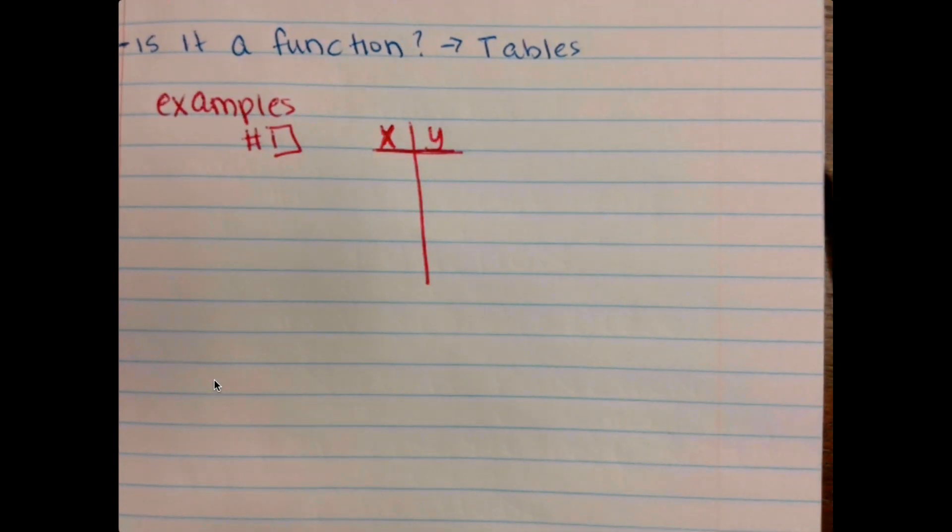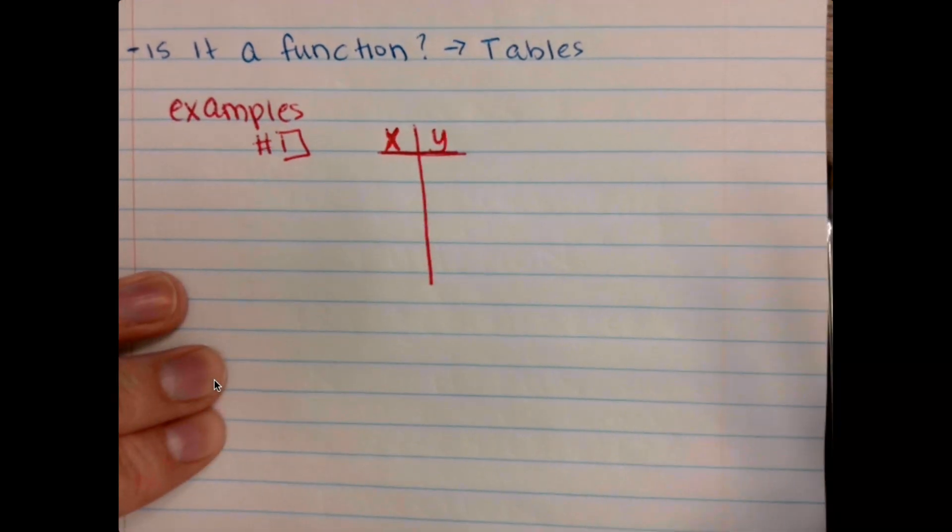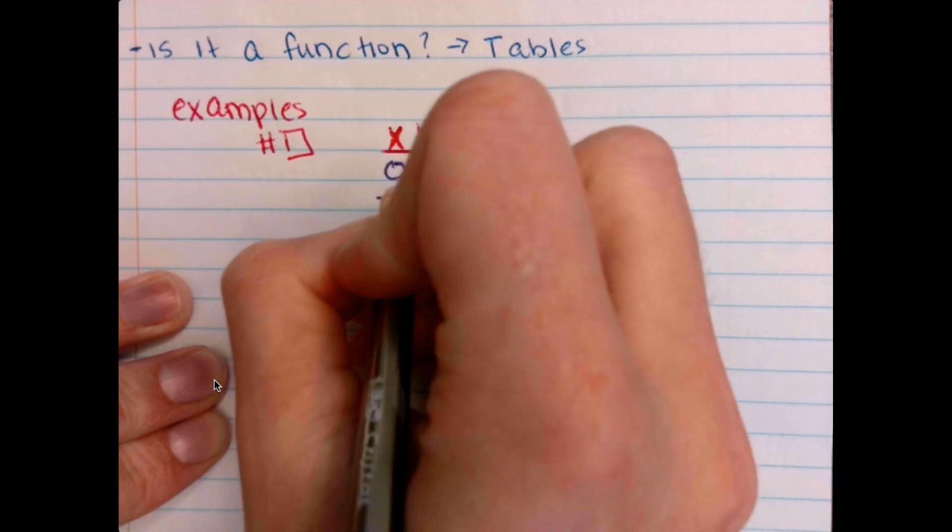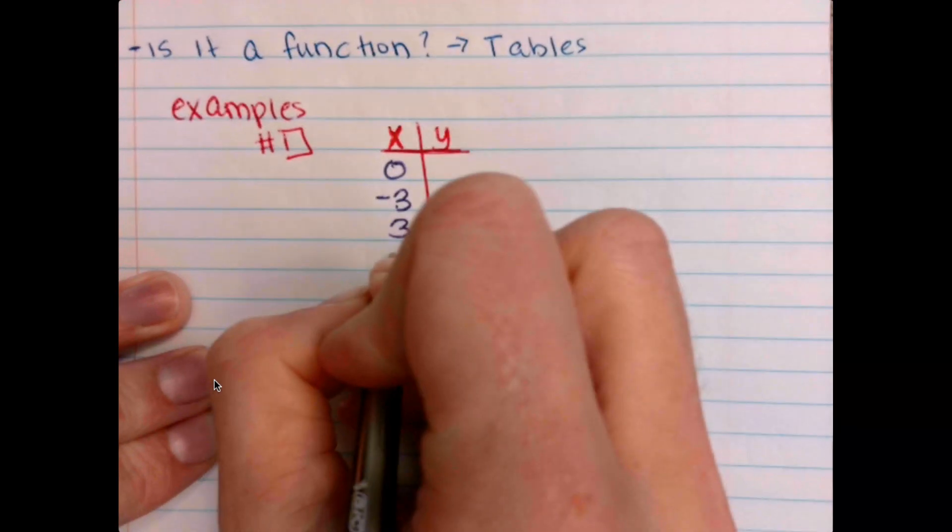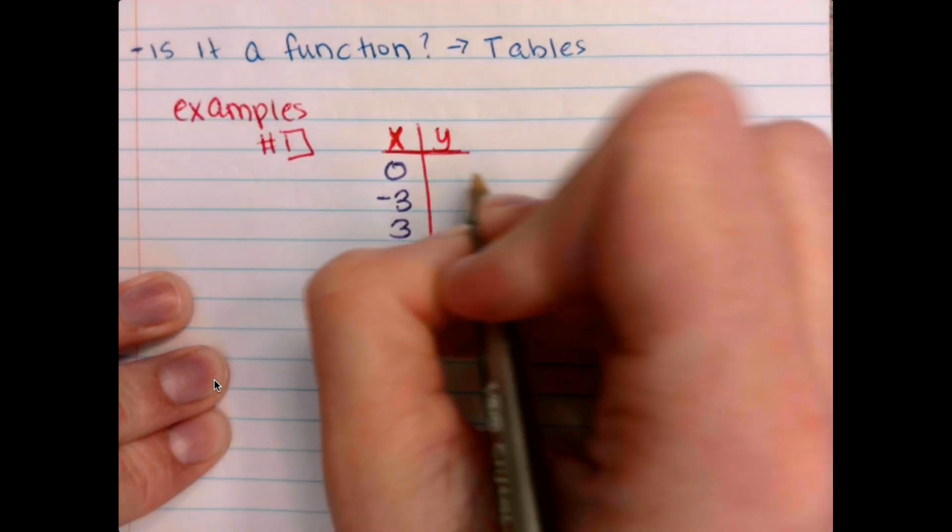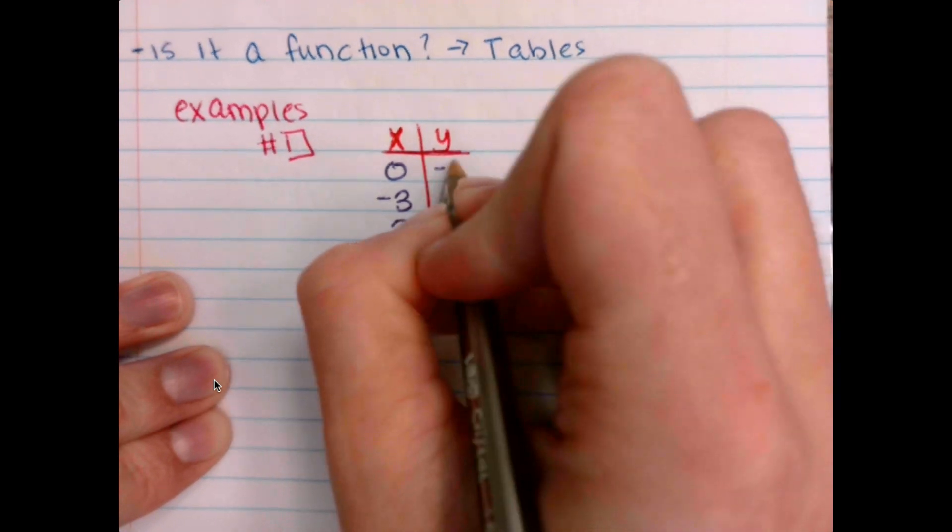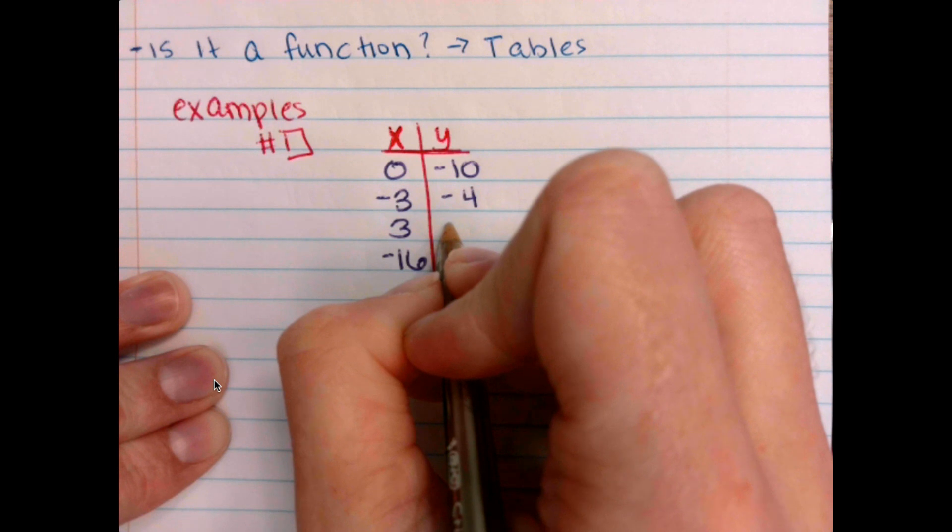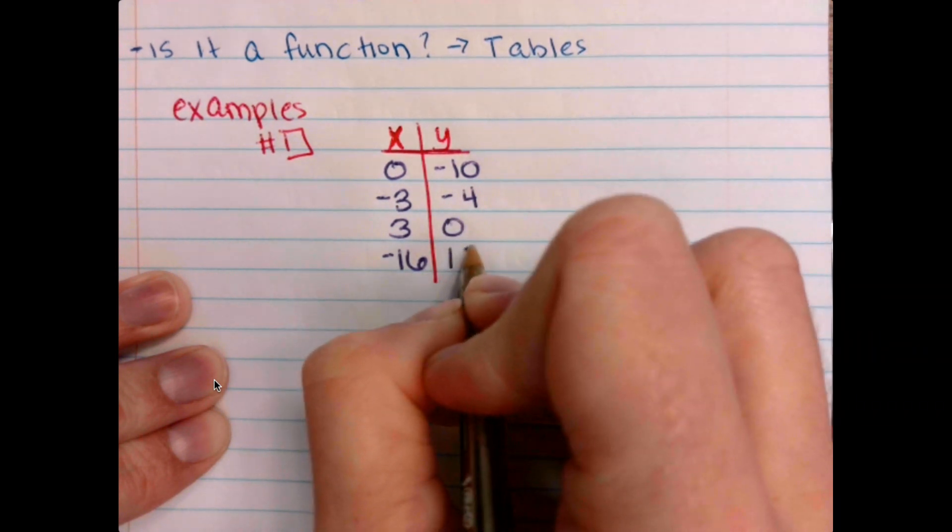So the first one is going to be 0, negative 3, positive 3, negative 16. On the right, we are going to have negative 10, negative 4, 0, and 15.